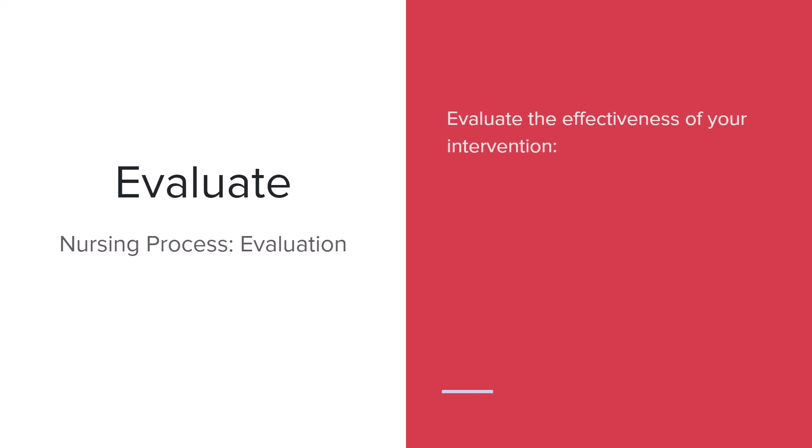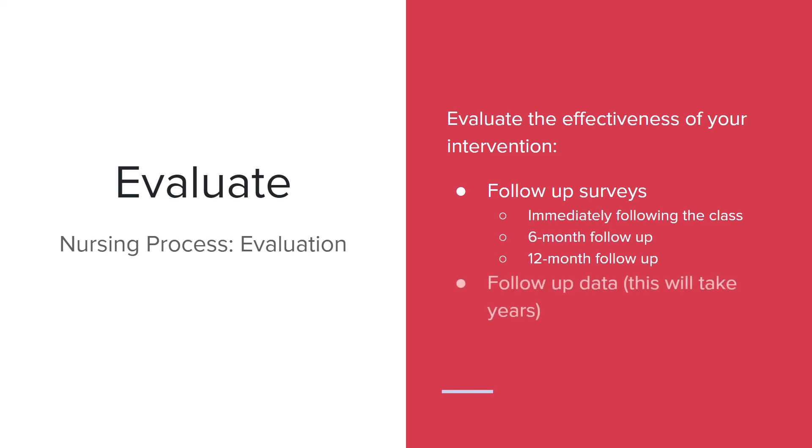We always want to evaluate, just as we would when giving a medication to a patient — we evaluate our implementation and our program. Did it work? Evaluating the effectiveness of a community-based program is going to include follow-up surveys, and you can do those immediately. Continuing with our smoking cessation example, we would do one immediately following the class, then a six-month follow-up and a 12-month follow-up. Follow-up data from government websites like the health department or the CDC is something that changes over years. The negative effects from smoking tobacco or vaping are long-term effects that take 20, 30, 40 years. However, we can do pre- and post-surveys to understand what our community knew before and after, and then follow up to see if they're still tobacco-free at six months and 12 months.